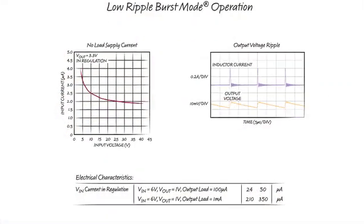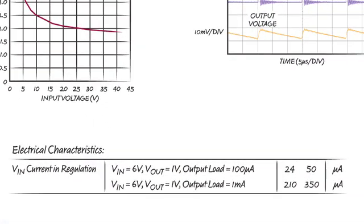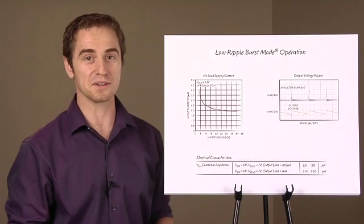The LT8610 datasheet guarantees input current for typical applications with 100 microamp and 1 milliamp output loads. This is great for customers who need fully specified low current consumption.